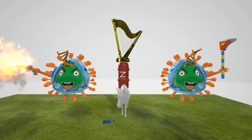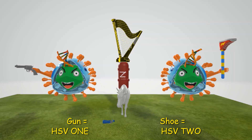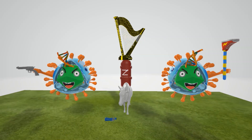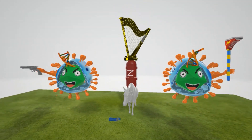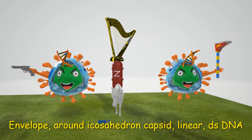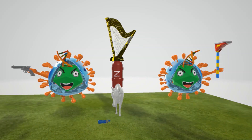We note the gun over here - gun for one - and this guy with the shoe, who will help us remember the structure of herpes simplex virus. Herpes simplex virus 1 and 2, along with all other herpes viruses, have an envelope surrounding an icosahedral capsid. Out of their head we have linear DNA - this helps us remember the linear double-stranded DNA seen in all herpes viruses. Keep this structure in mind as it will appear in all our herpes videos.